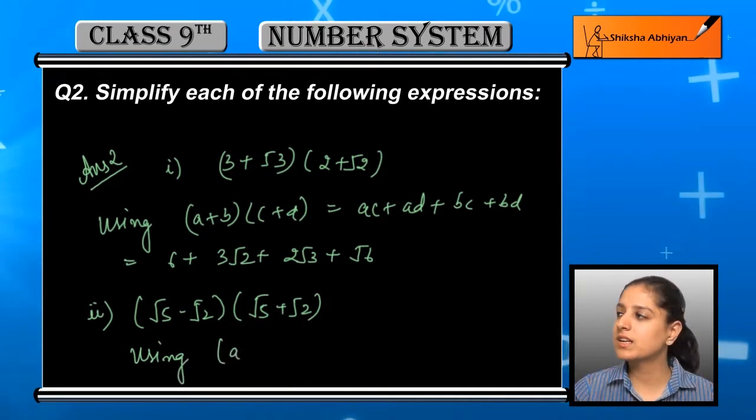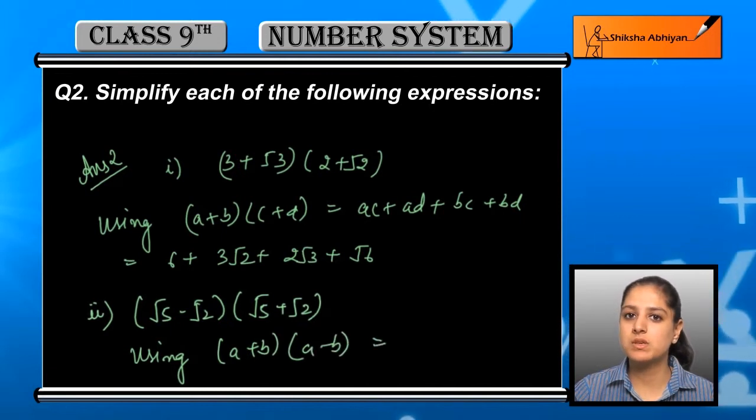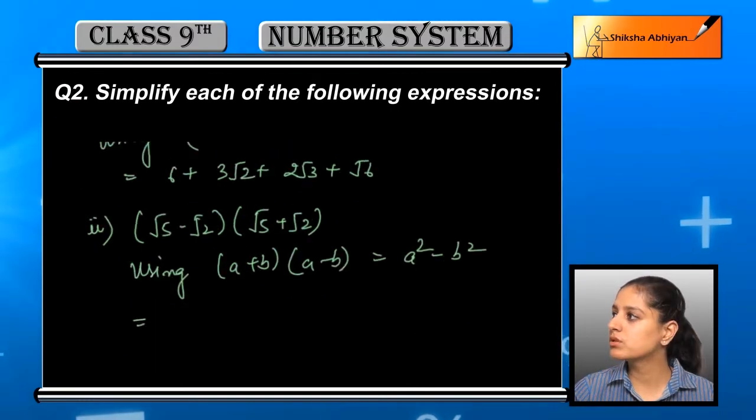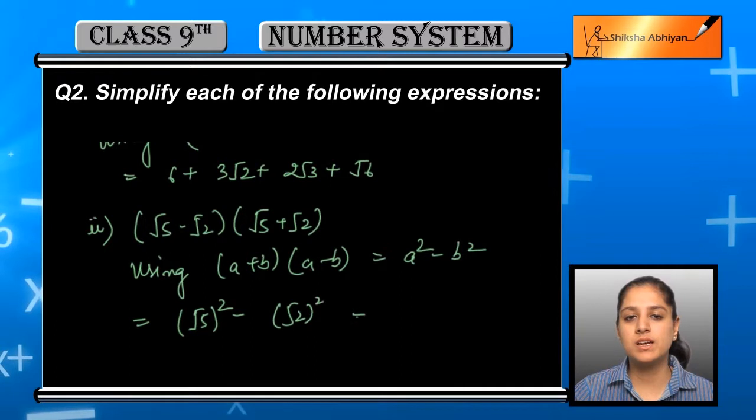The identity is (a+b)(a-b) which is equal to a² - b². In this case, a is √5 and b is √2. So we have (√5)² - (√2)² which equals 5 - 2, which is 3.